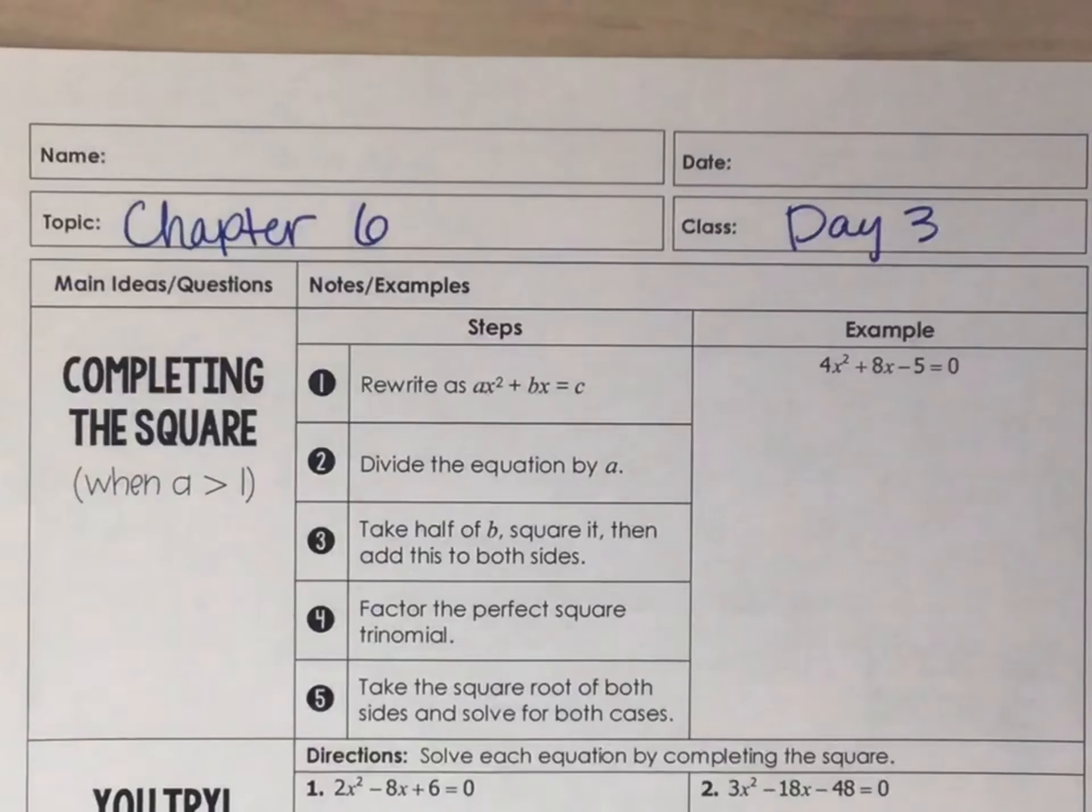So let's talk about completing the square when a is greater than 1. The first thing we want to do is just like those last problems, we're going to rewrite it with the last term on the other side of the equation. So this minus 5, I want to get to this other side, so I'm going to add 5 to both sides. Now we've got 4x squared plus 8x equals 5. So that was step 1.